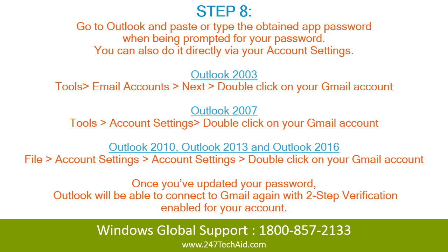Outlook 2003: Tools > Email Accounts > Next > Double-click on your Gmail account. Outlook 2007: Tools > Account Settings > Double-click on your Gmail account.